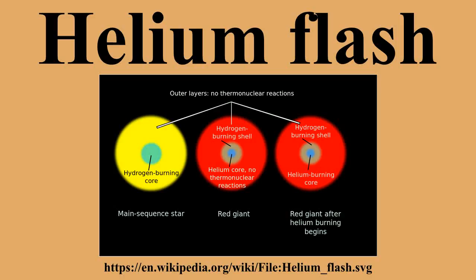This degeneracy pressure is finally sufficient to stop further collapse of the most central material, but the rest of the core continues to contract and the temperature continues to rise until it reaches the point at which the helium can ignite and start to fuse. The explosive nature of the helium flash arises from its taking place in degenerate matter.